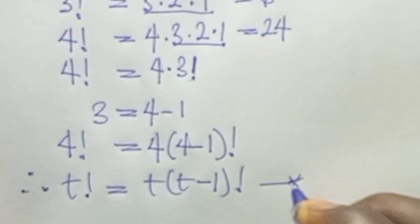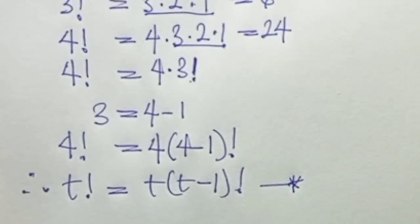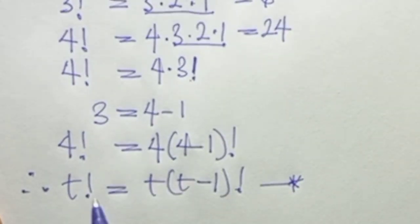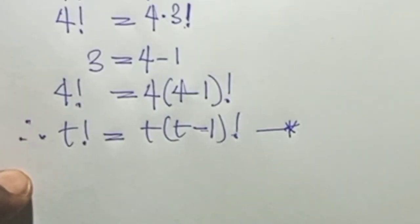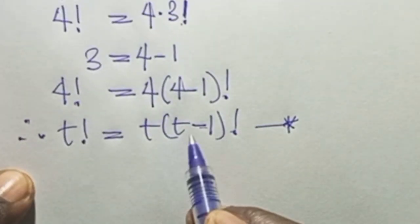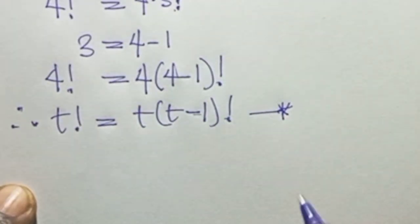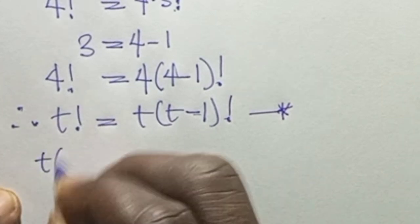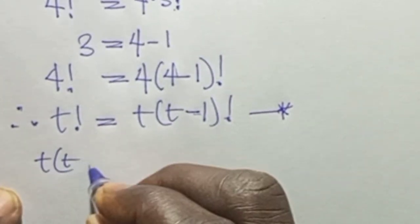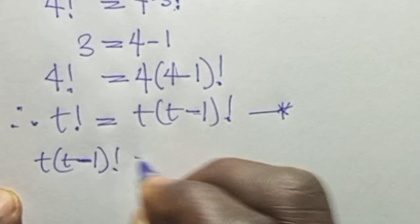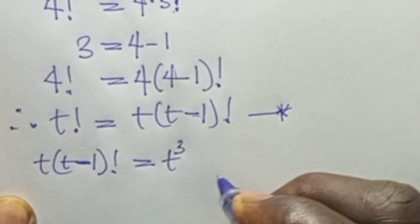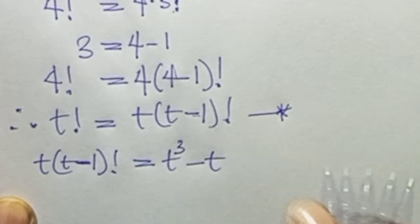This is crucial. In place of t factorial in our original equation, we write t into (t minus 1) factorial. So the equation becomes: t into (t minus 1) factorial equals t raised to the power 3 minus t.